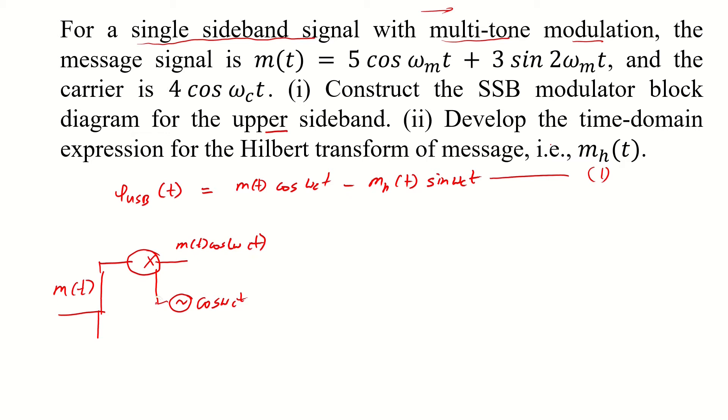And then from this local oscillator we use a phase shift of minus pi by 2. So we would have a sin omega ct.